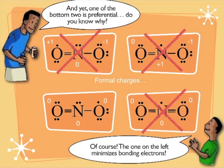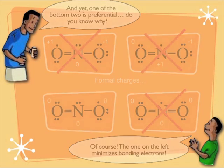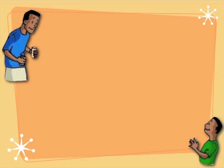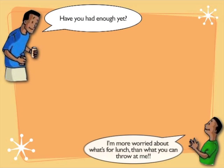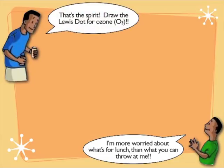That's a lot of work, but you don't run into odd numbers of electrons very often. For that preferred bottom structure, you could have drawn it a different way — you could have put the double bond on the other side and everything else would have been the same. That's the same thing we run into if you draw ozone. Go ahead and try drawing ozone.